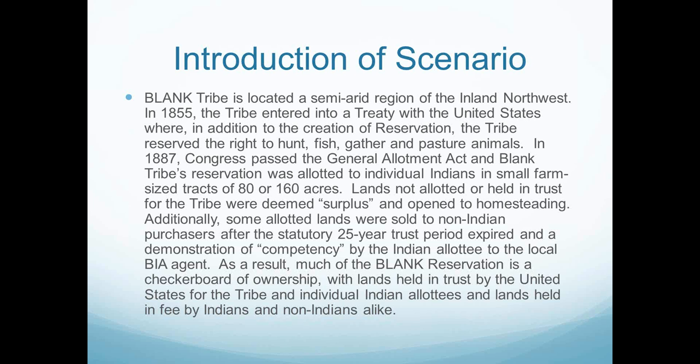Lands not allotted or held in trust for the tribe were deemed surplus and open to homesteading. Additionally, some allotted lands were sold to non-Indian purchasers after the statutory 25-year trust period expired. As a result, much of the Blank Reservation is a checkerboard of ownership — lands held in trust by the United States with the tribe and individual Indian allottees, and lands held in fee by Indians and non-Indians alike. Ex Creek begins just outside the current boundaries of the Blank Reservation on land ceded by the tribe to the United States when the reservation was established. There are no diversions upstream of the tribe, and the headwaters are located in a federally protected wilderness area.